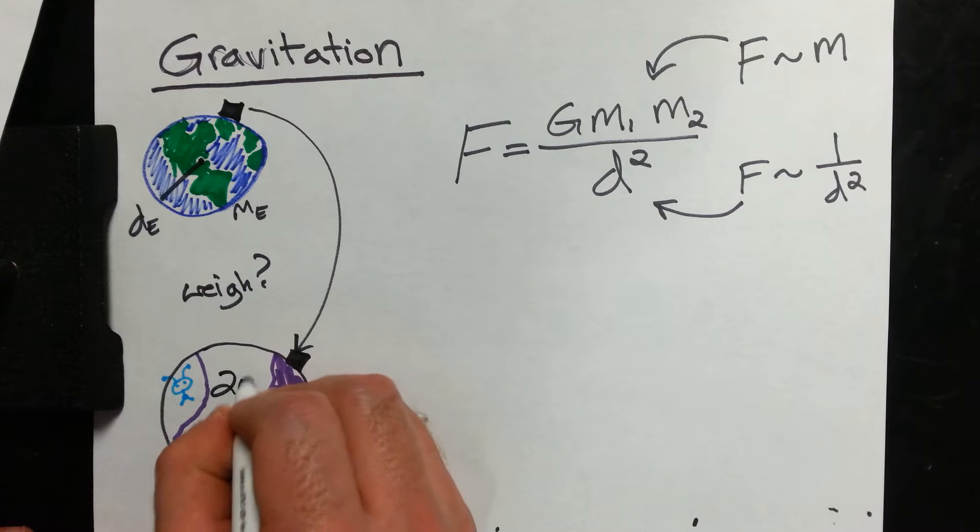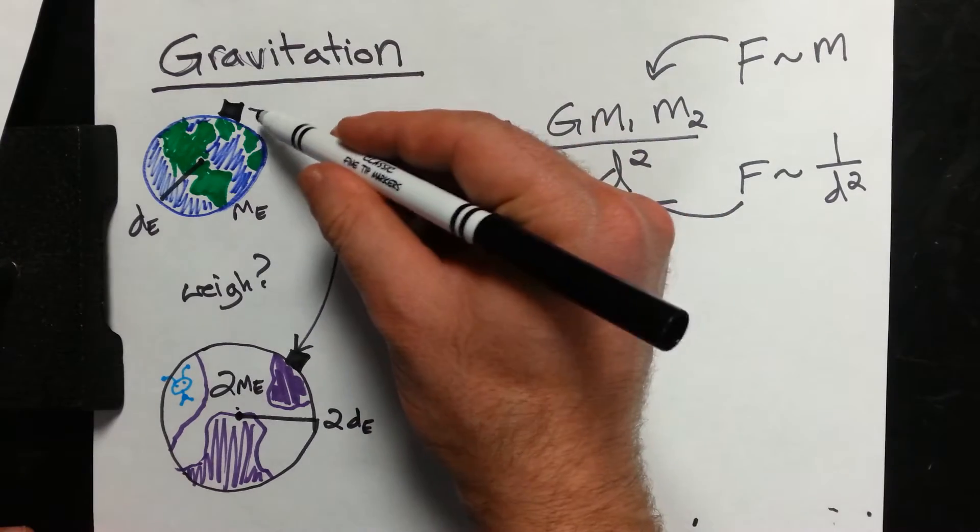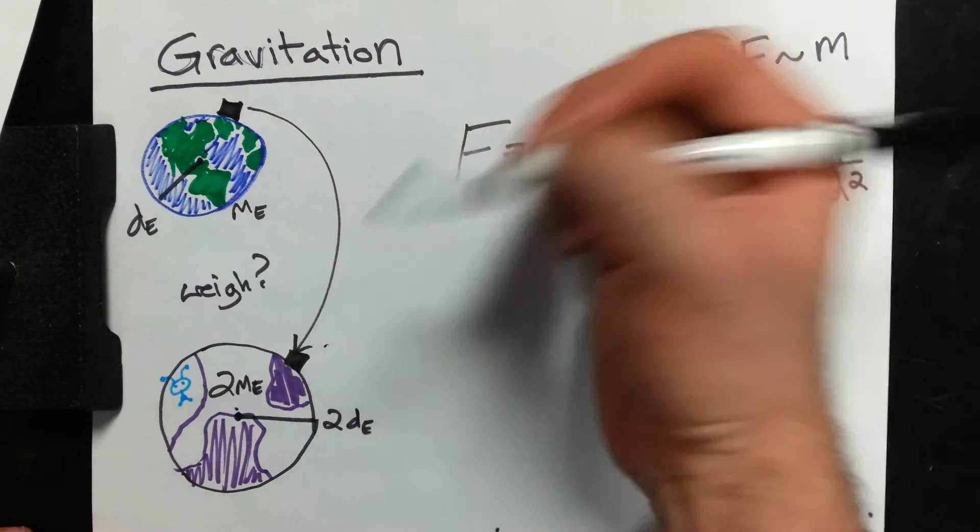Let's say the mass of this planet is twice Earth's mass. So it's twice as massive as the Earth, and the distance to the center is actually twice the distance to the center of the Earth. Here's my question. How is the weight of this satellite going to change on this new planet?